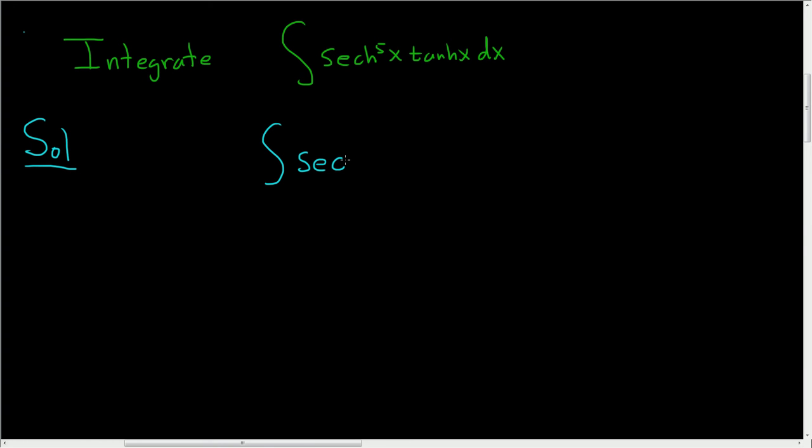So we can write this as the hyperbolic secant to the fourth times the hyperbolic secant of x and then the hyperbolic tangent of x.